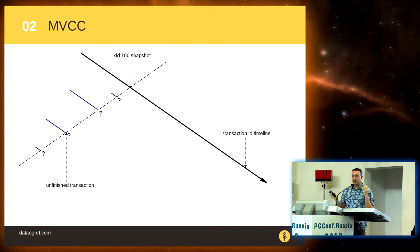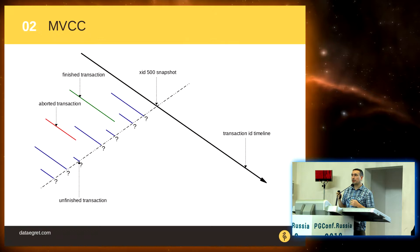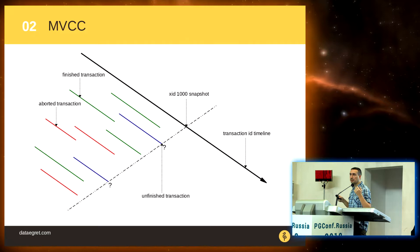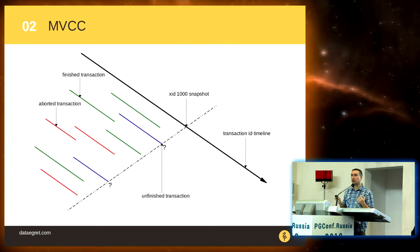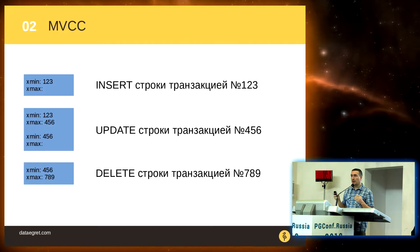In practice, clients connect to a database, open transactions, and start working with the data. They receive a snapshot of data and can make certain changes — either insert, delete, or update. All these changes within transactions are not visible to other transactions until commit or rollback happens. As soon as a transaction commits, the changes become visible to other transactions that are open or running at that moment. A transaction counter keeps growing, data are updated, some data become outdated — and dead lines appear.